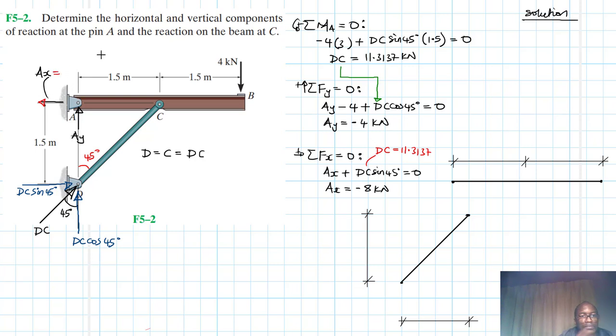And this is equal to, what is AX equal to? Is equal to 8 kilo newtons. AY also the direction will be facing downwards like so. And this is going to be equal to AY is just equal to 4 kilo newtons.